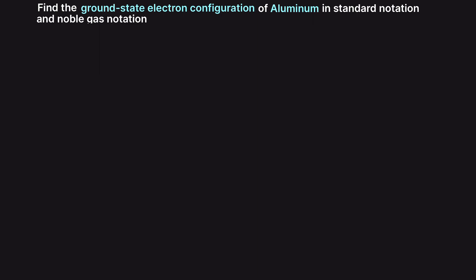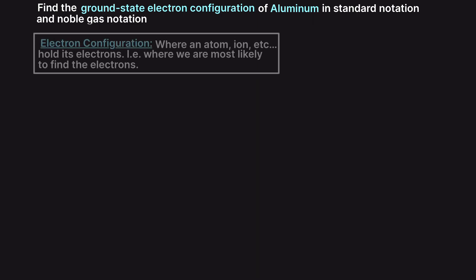When finding the electron configuration of an atom, we are being asked where does that atom place its electrons — i.e. what shells and orbitals are its electrons most likely to be found in.